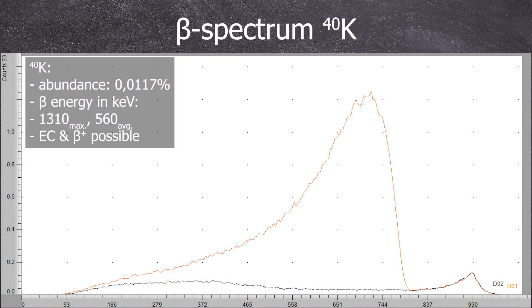Let's take a look at the spectra. Starting with potassium-40, it has a natural isotopic abundance of only 0.0117%. It's primarily a beta minus emitter with a half-life of 1.28 times 10 to the power of 9 years, a maximum beta energy of 1310 keV and an average beta energy of 560 keV. It also undergoes electron capture and beta plus decay.